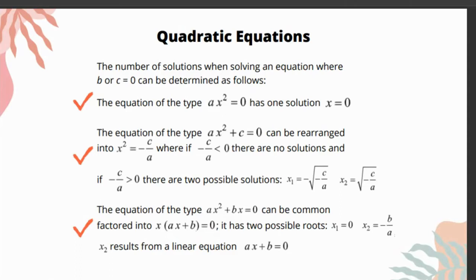The equation of the type ax² + c = 0 can be rearranged to solve for x², and since the resulting value is negative and the square of a number cannot equal a negative value, it has no solutions.